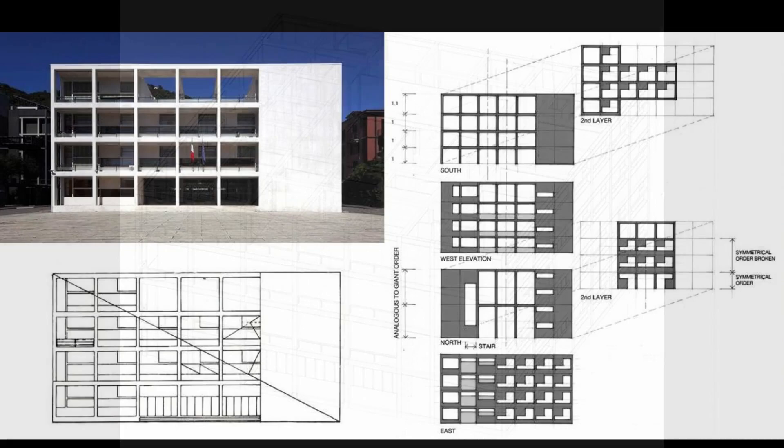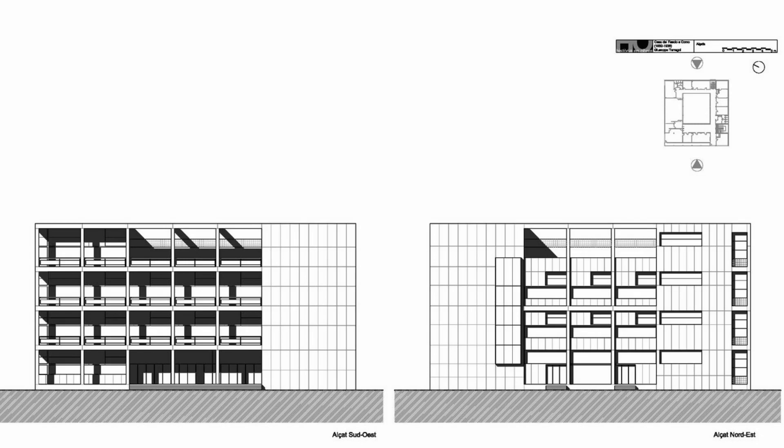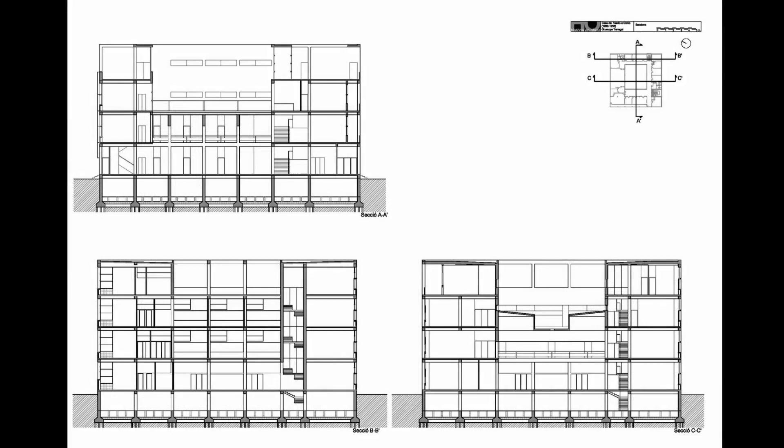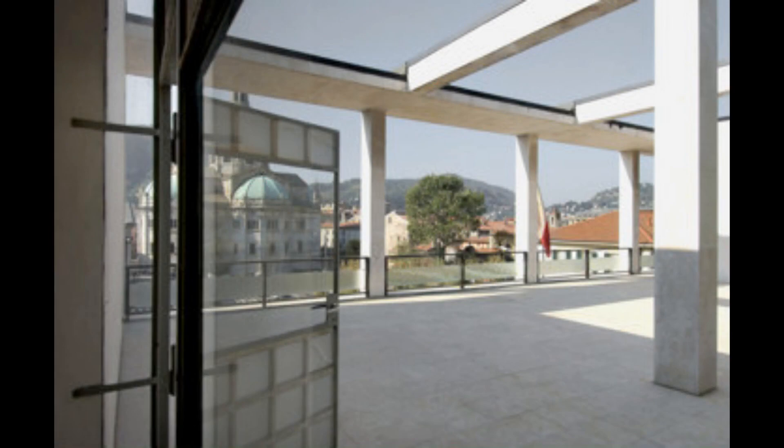The interior of the building is characterized by clean lines and simple forms. There is very little ornamentation or decoration, and the materials used are typically functional rather than decorative. Common materials include travertine, marble, concrete, stucco, steel, and glass, with little use of decorative elements such as wood or fabric.